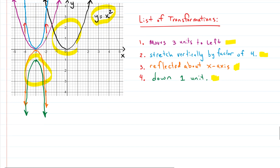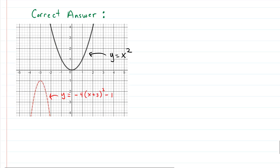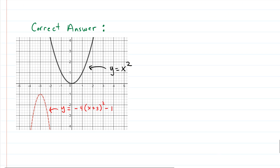If we run to Desmos quickly and graph this, we see the same answer. The black is our original y equals x squared, and the red is the finished transformed version: negative four times the quantity (x plus three) squared, minus one. Hopefully this helped you understand function transformations with an example covering all four groups of transformations. If it did help, please subscribe to the channel. Thanks for watching — have a great day.